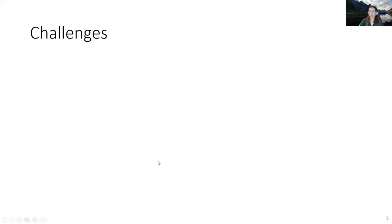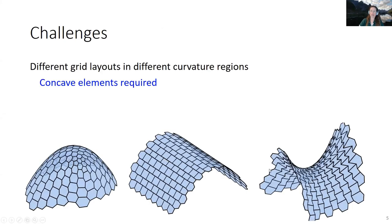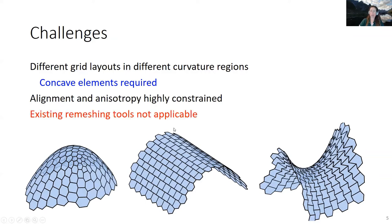Unlike planar quad meshes, which have been widely researched, planar hexagonal meshes pose some additional challenges. For example, we must have concave faces if you want to get a watertight mesh, and there are very strict alignment and anisotropy constraints, which effectively make all the existing remeshing tools not applicable.